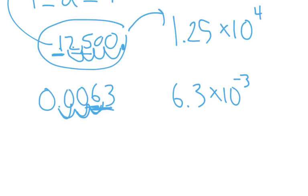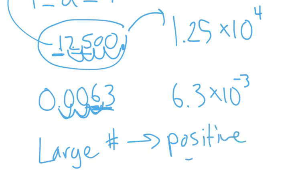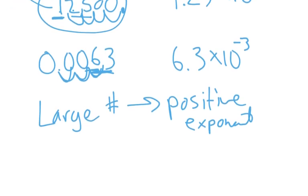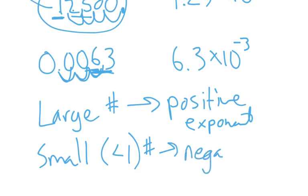And so there's a couple ways you can look at this. One is that if you have a large number, that's probably the easiest way to look at it, is so a large number is going to correspond to a positive exponent. And small numbers, and I'm talking about small, I mean something that's less than 1, so less than 1 is going to have a negative exponent.